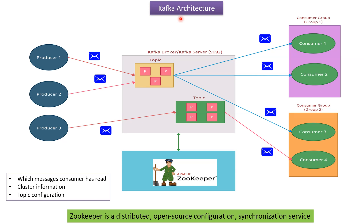In this video tutorial, I will explain Kafka architecture. Here you can see the Kafka broker, or Kafka server. The Kafka server will be listening on a particular IP address and port number. The default port number of the Kafka server is 9092.